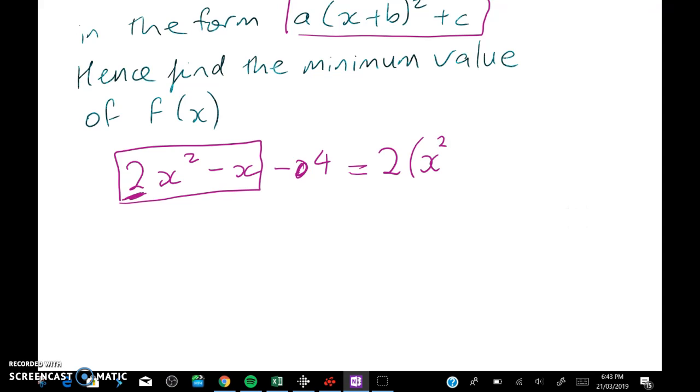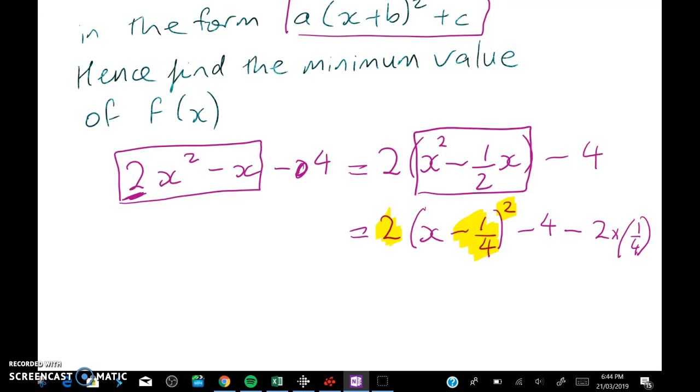So I'm going to partly factorise just the first two terms. So we're going to leave the minus four where it is. So we get two times bracket x squared minus one half x minus four. Now to complete the square on this we'll leave the two sitting here. So we've got this and we're going to go x minus one quarter squared minus four. But now I've accidentally added in something in here. This squared times two has come in kind of by mistake. So I need to take it out.